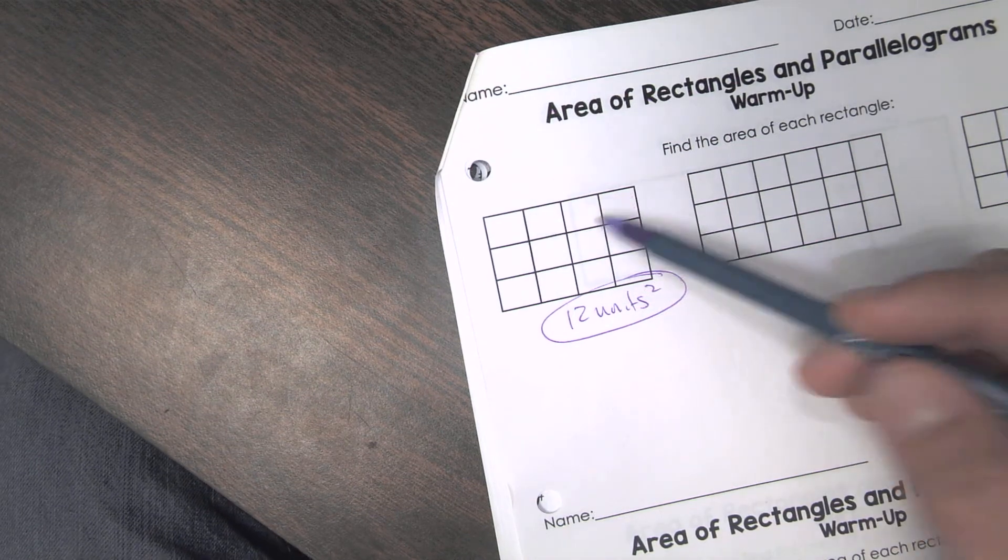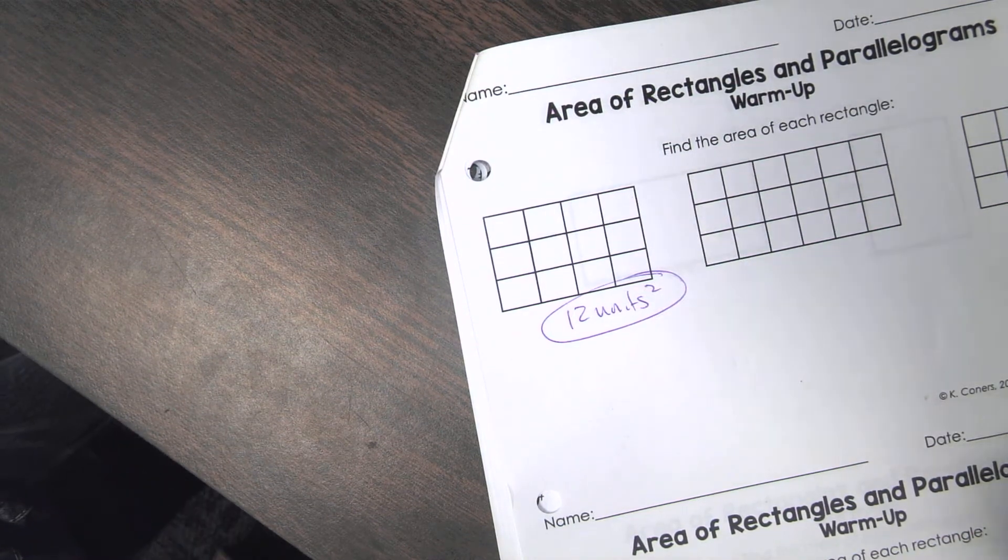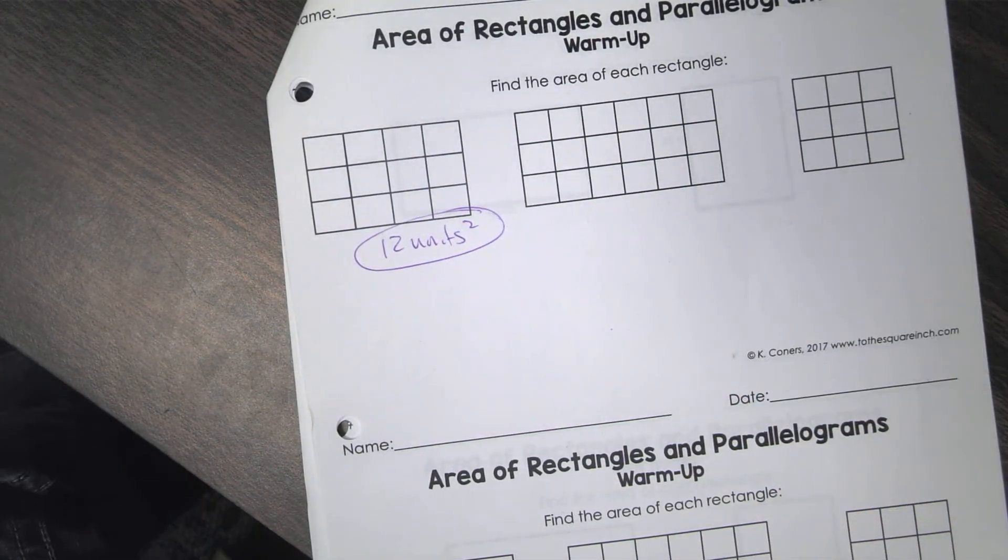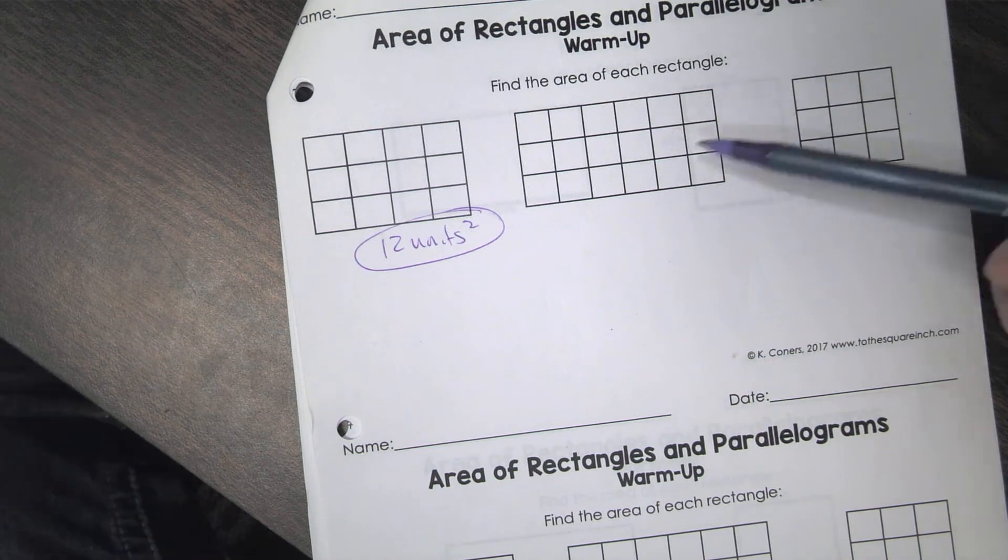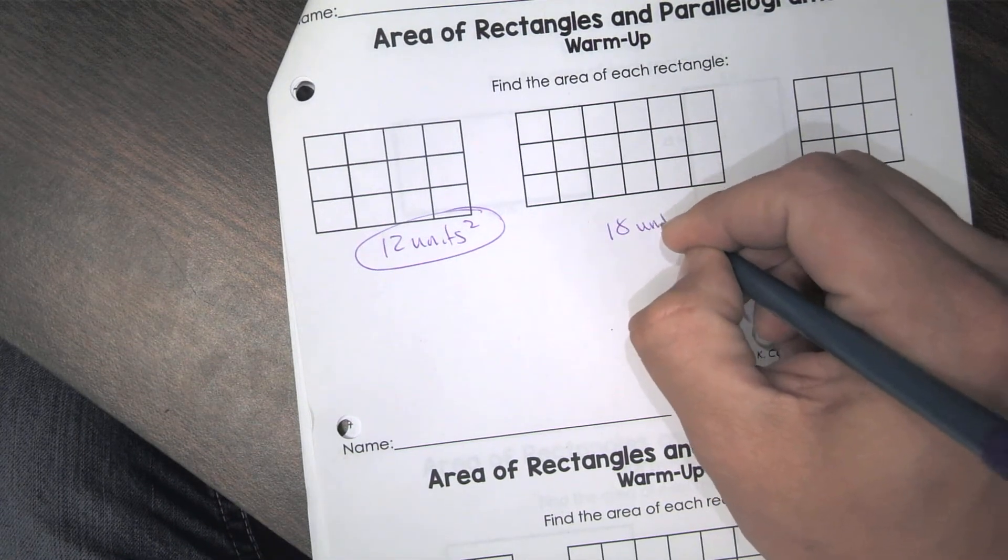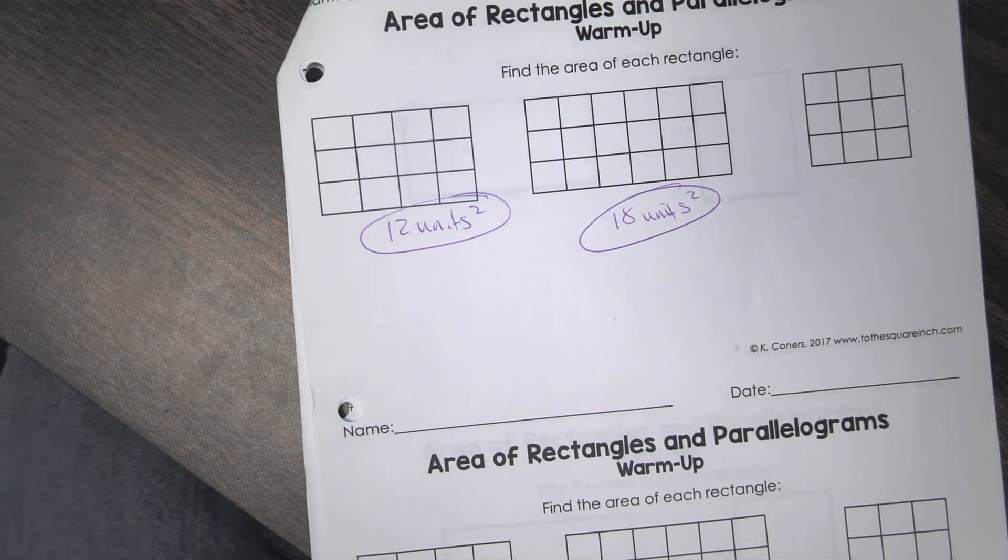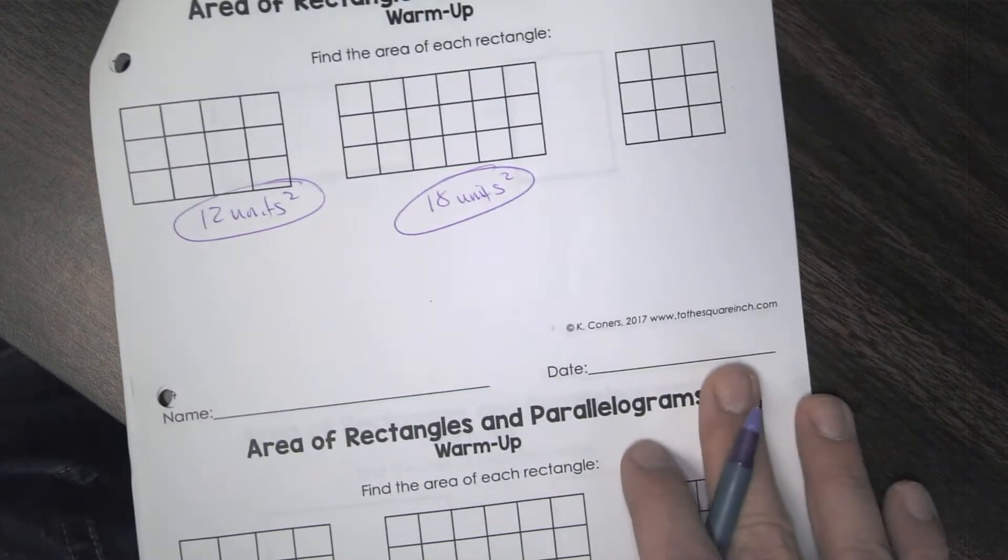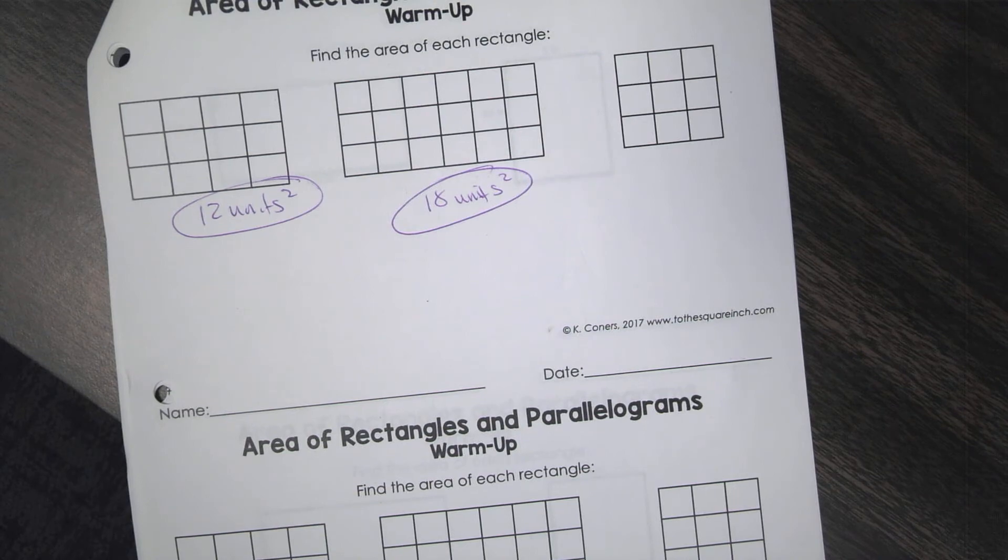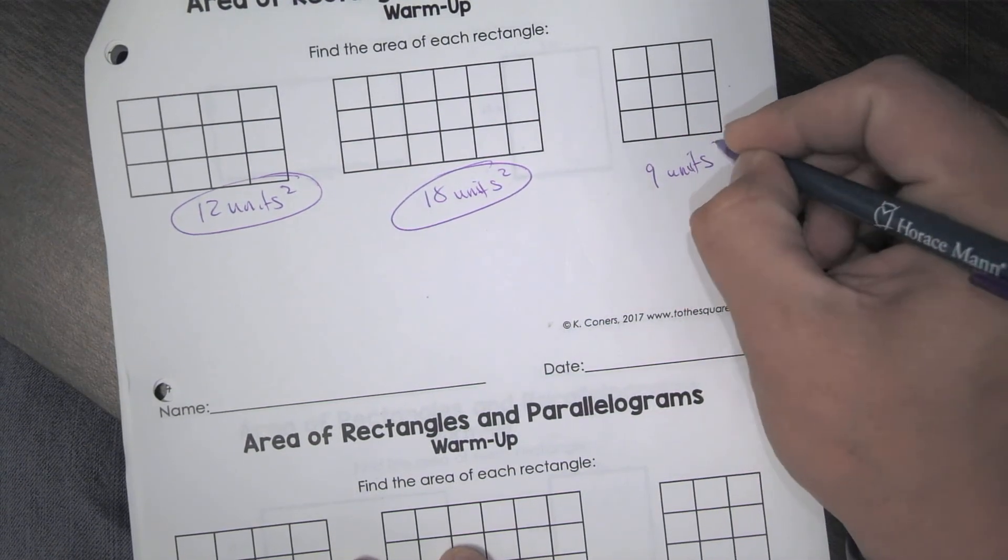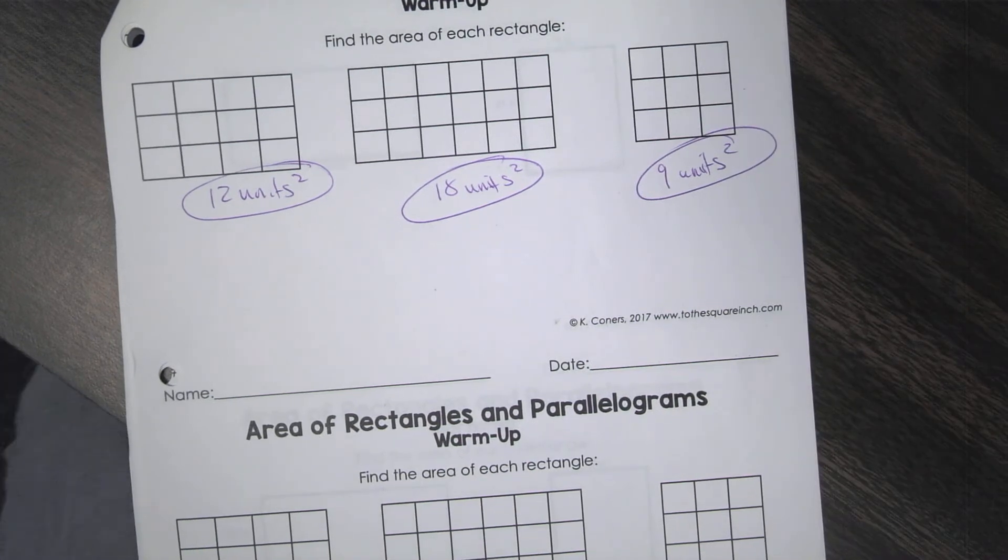Especially when you start, like these ones are easy to add up because they're small. But once you start getting into the bigger ones, that method, find the base, find the height. So like this one, what would this one be? 18 units squared. You always use units if they don't actually have a measurement. And the last one here, what would the area be there? Nine units squared. So that's the only difference on the coordinate plane and all that. They won't actually give you a measurement. They'll make you either find it yourself or count them up.